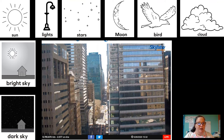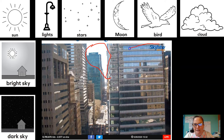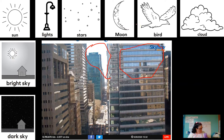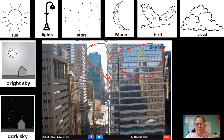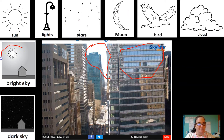Here we are back in New York. I like this picture because even though we can't see much of the sky right here, you can still see a bunch of the sky as a reflection in the building. Do you guys see the sky in the building? I thought that was really kind of neat. So which one of these things do we see in the sky of New York? I didn't see any of these things — no clouds, no birds, no moon, no stars, no lights, no sun. But I can tell that it's a bright sky.